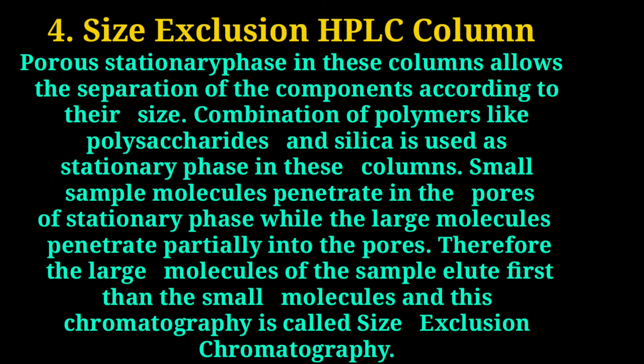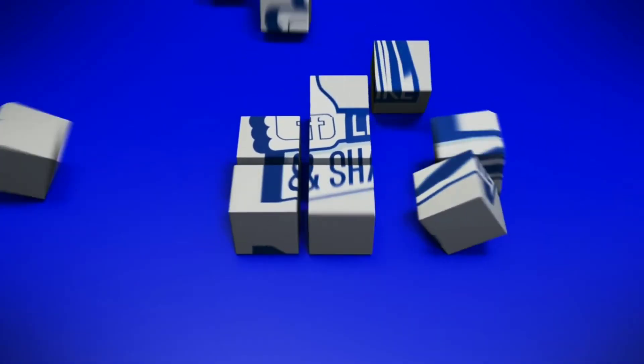Number four and last: size exclusion HPLC columns. The porous stationary phase in these columns allows the separation of components according to their size. A combination of polymers like polysaccharides and silica is used as the stationary phase. Small sample molecules penetrate into the pores of the stationary phase, while large molecules only partially penetrate the pores. Therefore, the large molecules of the sample elute first, followed by the small molecules. This chromatography is called size exclusion chromatography. These columns are generally not used in the analysis of pharmaceutical compounds.